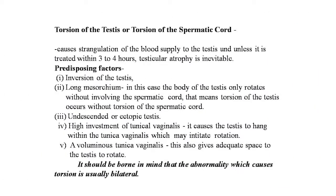The next topic is torsion of the testis or torsion of the spermatic cord. This is an uncommon condition limited to pre-pubertal males. Its importance lies in the fact that it causes strangulation of the blood supply to the testis, and unless treated within 3 to 4 hours, testicular atrophy is inevitable. Predisposing factors include inversion of the testis and a long mesorchium.